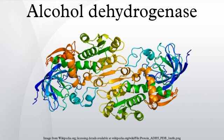The human genes that encode class II, III, IV, and V alcohol dehydrogenases are ADH4, ADH5, ADH7, and ADH6, respectively.